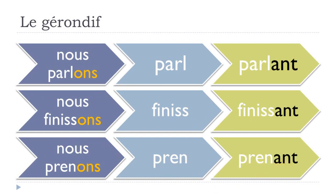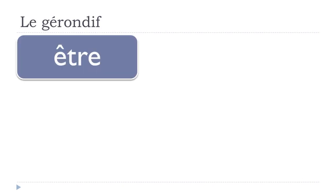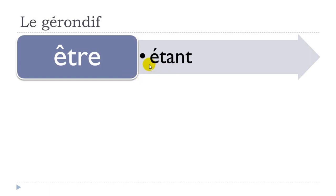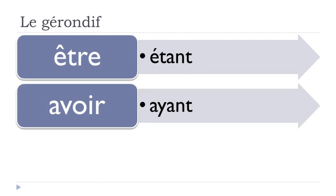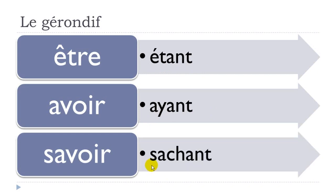Only three exceptions: être → étant, avoir → ayant, savoir → sachant. That's a good thing in French, as normally there are more exceptions. So: être → étant, avoir → ayant, savoir → sachant.